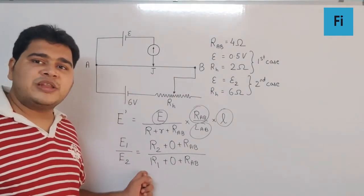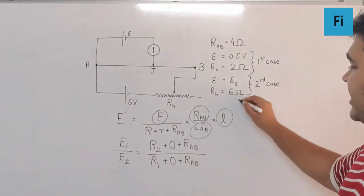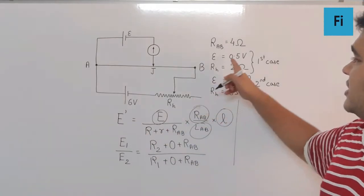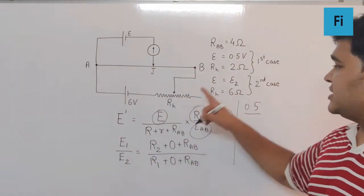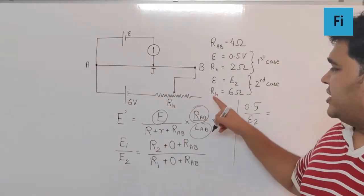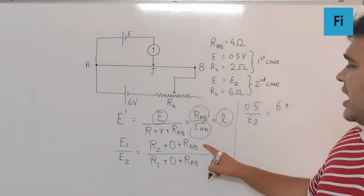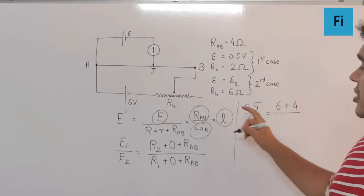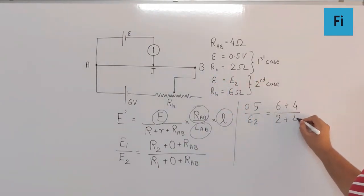If we substitute the values, E1 is 0.5, E2 is unknown. R2 is the second case rheostat resistance which is 6 plus R_AB is 4, over R1 is the first case which is 2 plus R_AB is still 4.